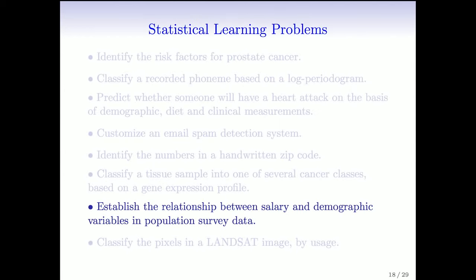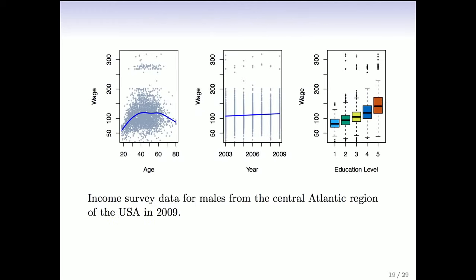The next example is establishing the relationship between salary and demographic variables in population survey data. We see income from the central Atlantic region of the USA in 2009. As a function of age, income initially goes up, then levels off, and then goes down as people get older. Incomes gradually increase with year as cost of living rises, and change with education level (shown as box plots). The goal is to use regression models to understand the roles of these variables together and identify interactions.